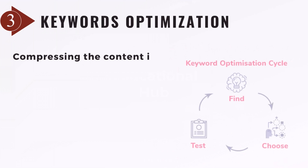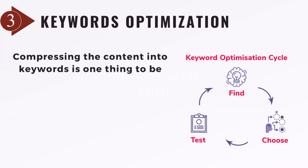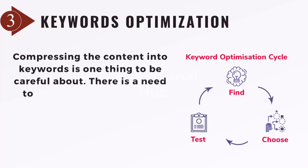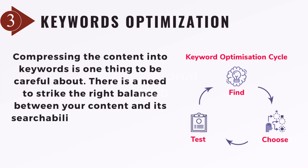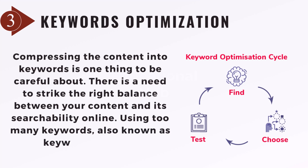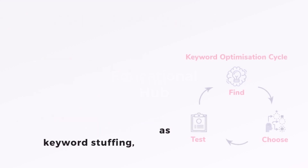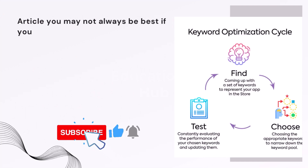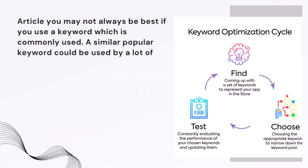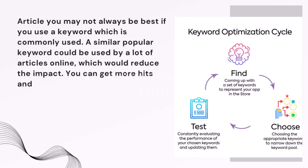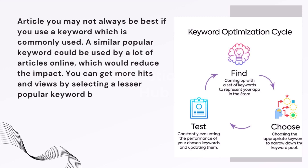Step 3: Keywords Optimization. Compressing the content into keywords is one thing to be careful about. There is a need to strike the right balance between your content and its searchability online. Using too many keywords, also known as keyword stuffing, might get your article unindexed, making it hard to find online. Additionally, using a keyword that is very commonly used may not always be best. A similar popular keyword could be used by many articles online, which would reduce the impact. You can get more hits and views by selecting a lesser popular keyword that is still appropriate and important for your search.